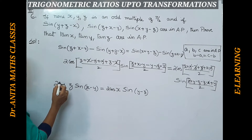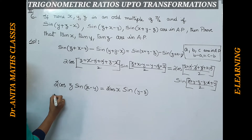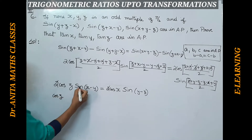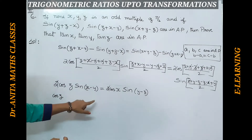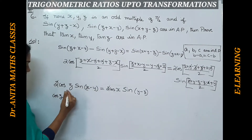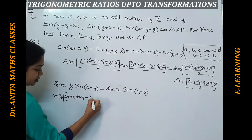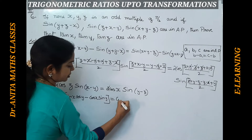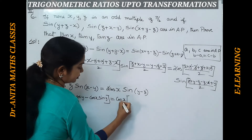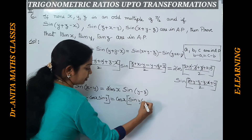Now we expand using the sine A minus B compound angle formula: sin A cos B minus cos A sin B. So cos z · sine(x−y) expands to cos z · (sin x cos y − cos x sin y), and cos x · sine(y−z) expands to cos x · (sin y cos z − cos y sin z).